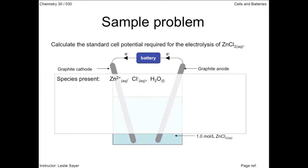By looking at our data book, we can see that the zinc ion is the strongest oxidizing agent. So we show the electrical potential for the reduction of zinc. The chloride ion is a reducing agent, but an even stronger reducing agent is water.